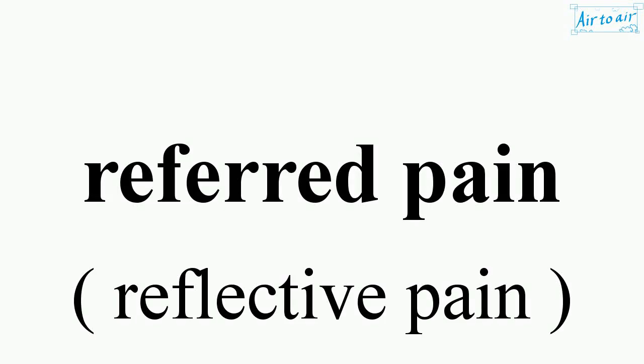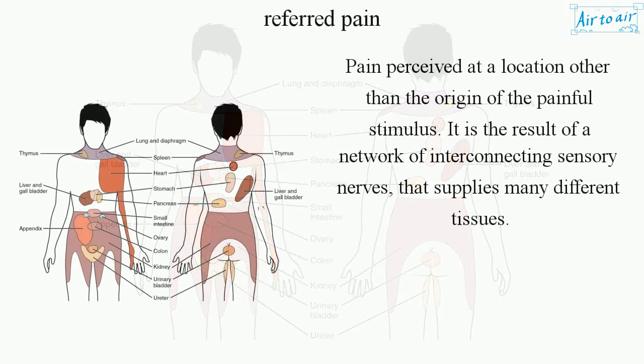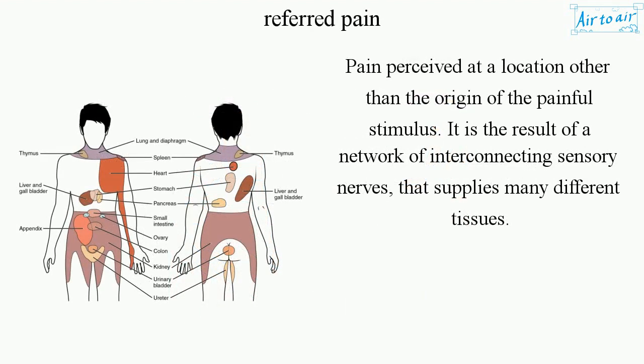Referred pain is pain perceived at a location other than the origin of the painful stimulus. It is the result of a network of interconnecting sensory nerves that supplies many different tissues.